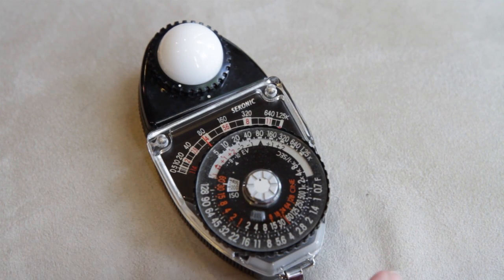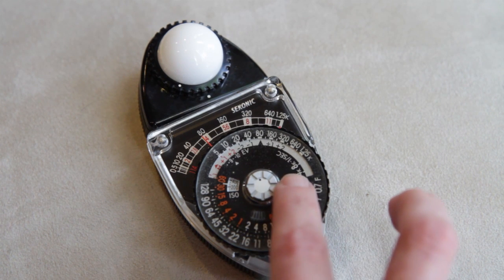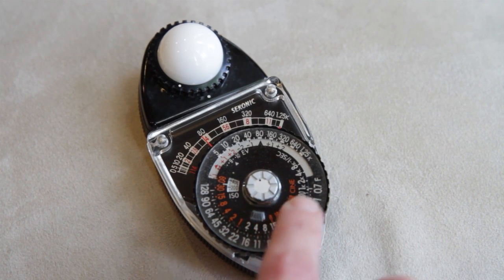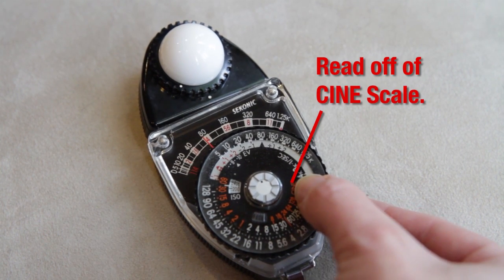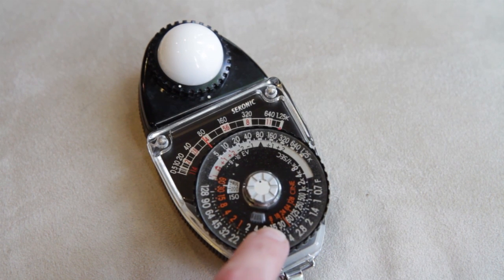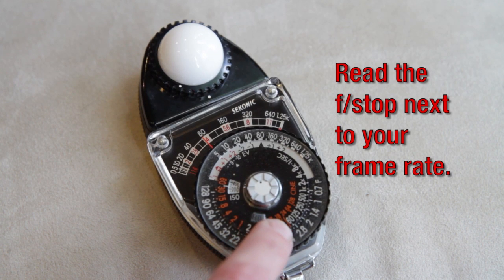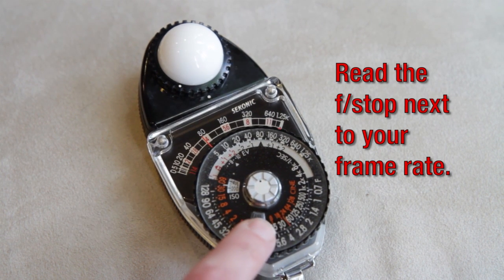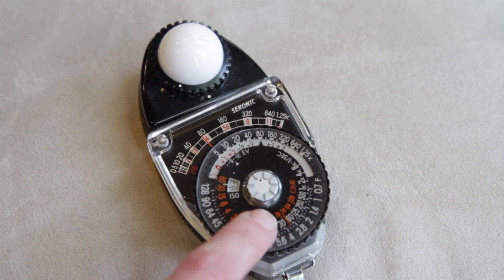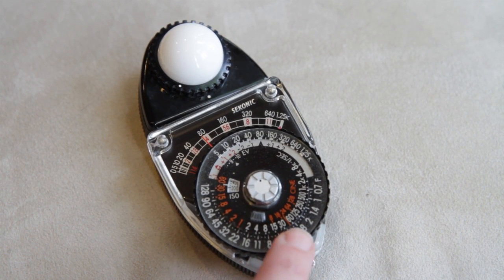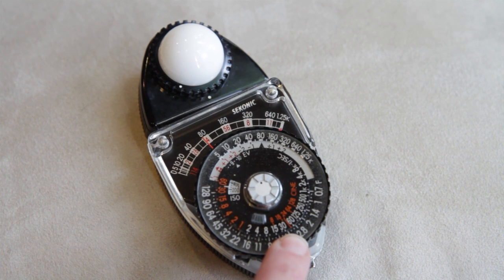This light meter can be used for still photography or cinematography. When we use it for cinematography, we come down to this red scale here, the cine scale, and we look at these red numbers that are frame rates. 24 has a little line because 24 is going to be normal exposure, normal motion, normal speed. So if we're doing that, we just say 24 frames per second, that puts us about a third closed down from 2.8.